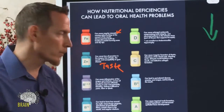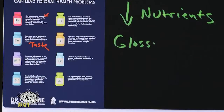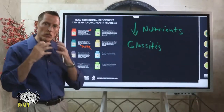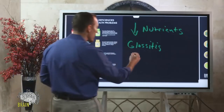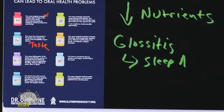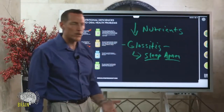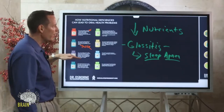B1, B2, and B3 deficiencies can cause inflammation of the tongue, also referred to as glossitis. The tongue becomes beefy, large, and red. Some people have glossitis that closes their airway and they can't sleep well, leading to a diagnosis of sleep apnea. If you're struggling with sleep apnea and don't know why, have your doctor check your tongue for glossitis — if it's swollen, ask whether it could be a B vitamin deficiency.